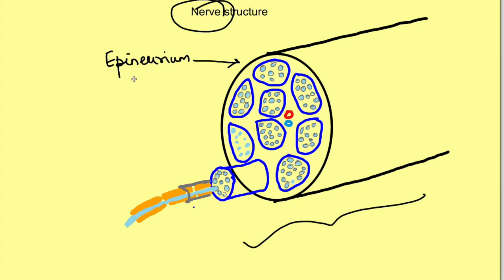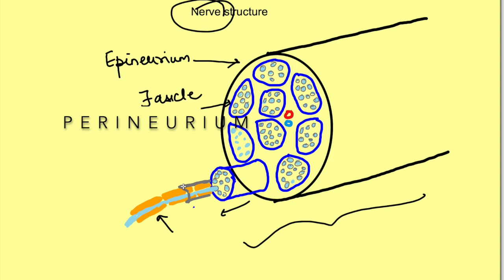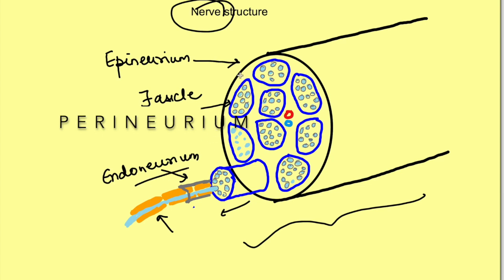Inside, there are bundles of neurons — the blue color shows these bundles. The covering around each bundle is known as the perineurium. The bundle of neurons surrounded by perineurium forms a fascicle. Each individual neuron is also surrounded by a connective tissue covering called the endoneurium. So: outermost is epineurium, innermost is endoneurium, and the one surrounding a number of nerve fibers forming a fascicle is perineurium.